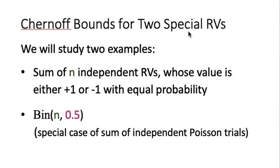Next, we will study two special random variables and then derive their corresponding Chernoff bounds. The first one is the sum of n independent random variables such that the value of each could either be plus 1 or minus 1 with equal probability. This is similar to the sum of independent indicators, except that for indicators the value could be plus 1 or 0, but here the value is either plus 1 or minus 1.